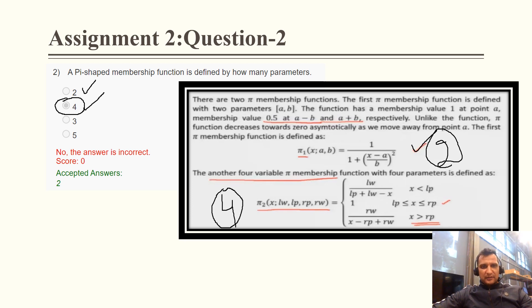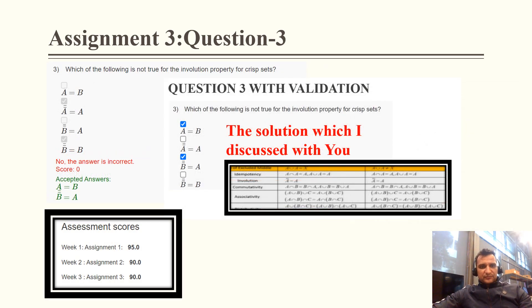That's why we got less marks in this question, and this is a minor mistake. Assignment 3, Question 3: Which of the following is not true for the involution property for the crisp set?